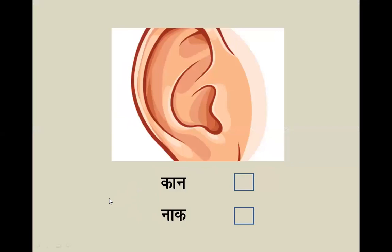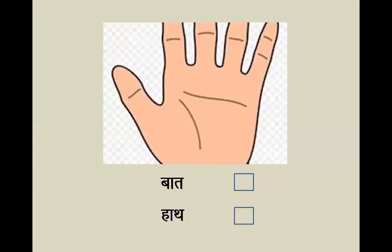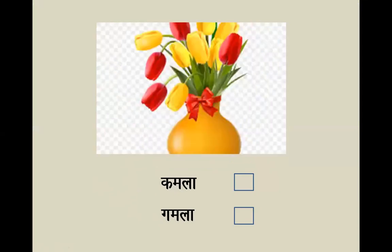Next one — 'kan' means ear. Which one is 'kan'? Identify correctly. 'Hot' — identify correctly. 'Gamla' — identify the word correctly. So this long line is the ā symbol — a straight line placed near the letter.